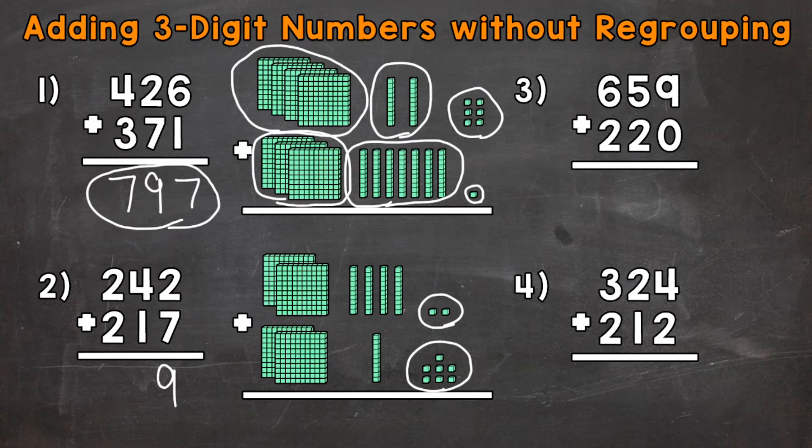Then we have 4 plus 1, or 40 plus 10. 4 groups of 10 has a value of 40, plus 1 group of 10, which has a value of 10. So that's going to give us a 5 in the tens place. 4 plus 1 is 5, or 40 plus 10 is 50. That 5 is in the tens place, so it has a value of 50.